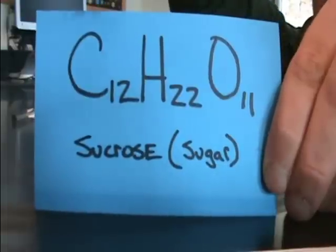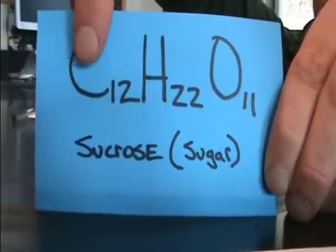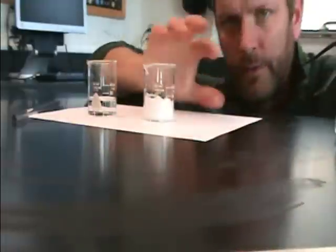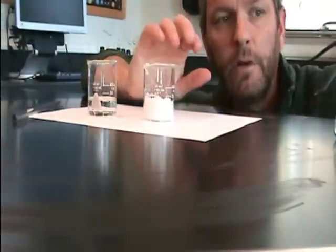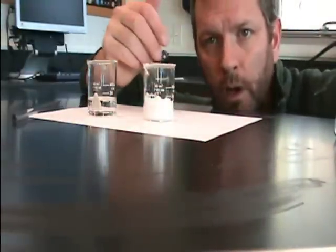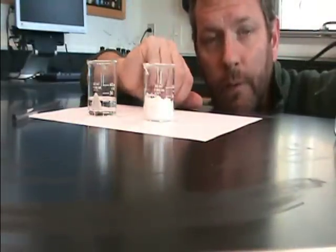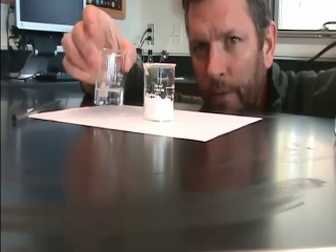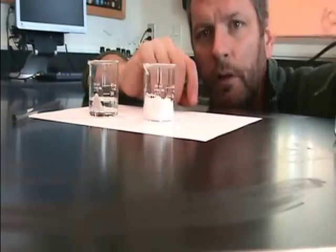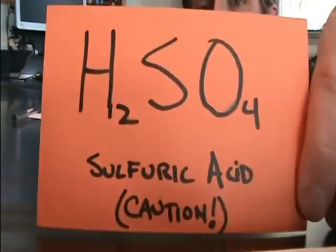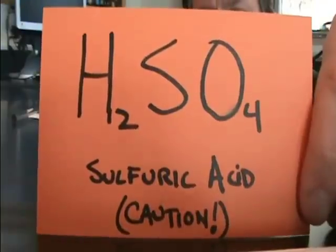Notice the components that you have: carbon, hydrogen, and oxygen. These are bonded together in a certain way to form what we know as table sugar. The other substance right here, this liquid, is a fairly dangerous substance called sulfuric acid.